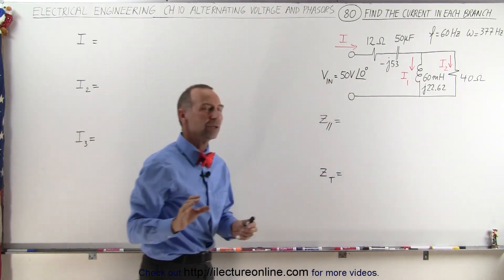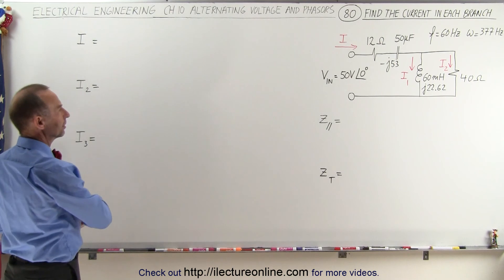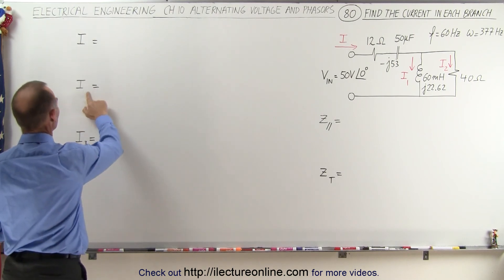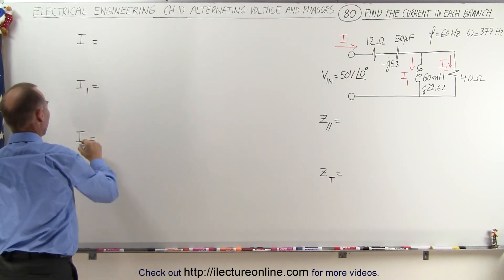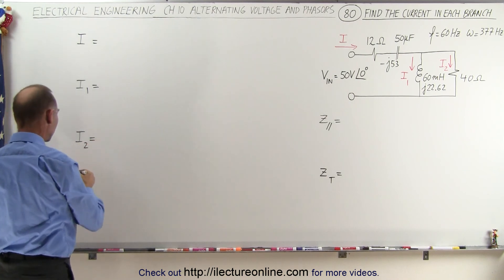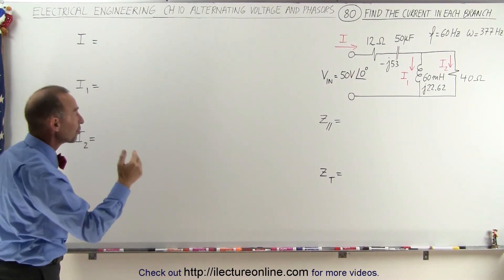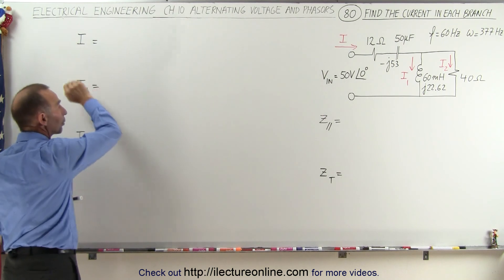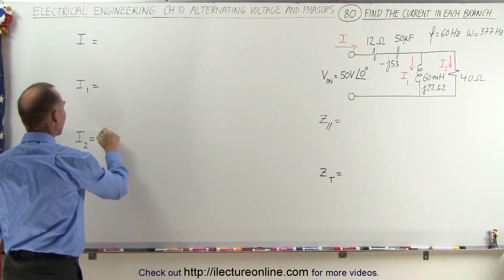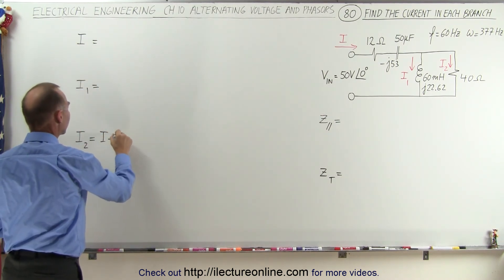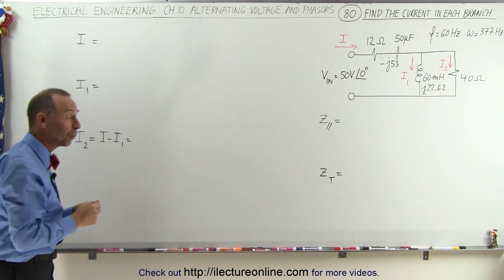And what we're going to do here is something different. When it comes to trying to find I2, we're going to do that by subtracting I1 from the current into the circuit. So we're going to write this as I minus I1, and we should be able to get the current that way as well.